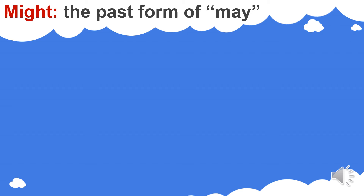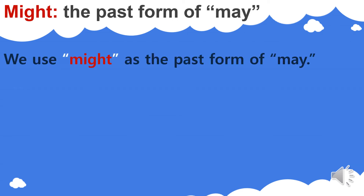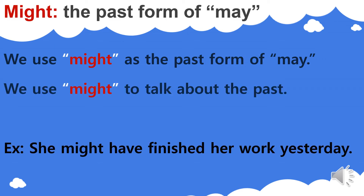Might as the past form of may — when we need to talk about the past and we are using may in the past, then we have to use might instead of may. For example: 'She might have finished her work yesterday.' I'm talking about yesterday, about the past, so I used might. Might is expressing the past form of may — we use it because we are referring to the past form of the modal verb may.